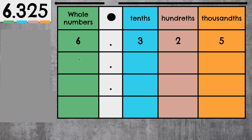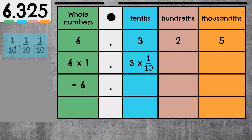This 6 represents 6 wholes, so 6 ones. We know that 6 times 1 equals 6 wholes. We have a 3 in the tenths place, which means we have 3 tenths, or 3 times 1 tenth, which simply means 1 tenth plus 1 tenth plus 1 tenth, 3 times. We know that 3 times 1 tenth will give us 3 tenths, as we can see right here. So this 3 is worth 3 tenths.